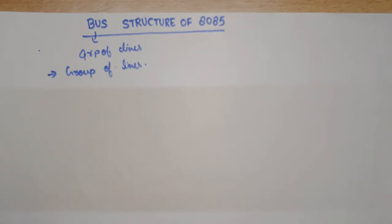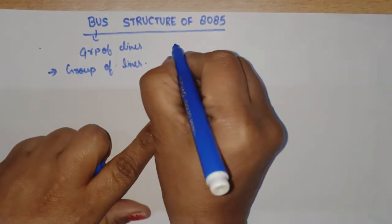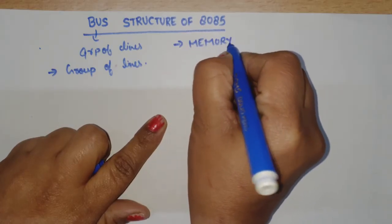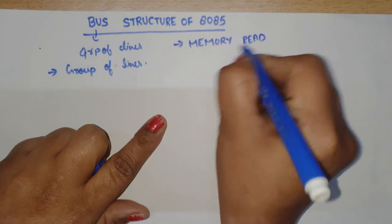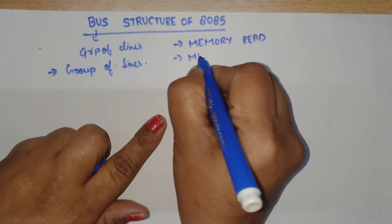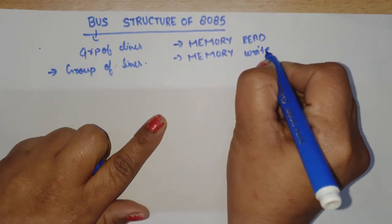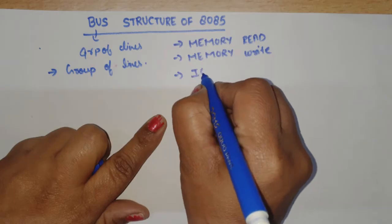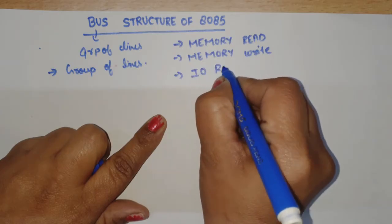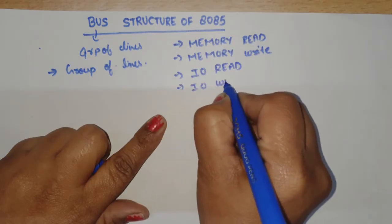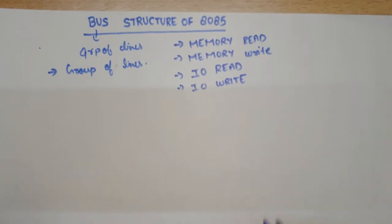A microprocessor initiates 4 operations. The first is memory read, the second is memory write, the third is input/output read, and the fourth is input/output write. These are the 4 operations which are initiated by the microprocessor.